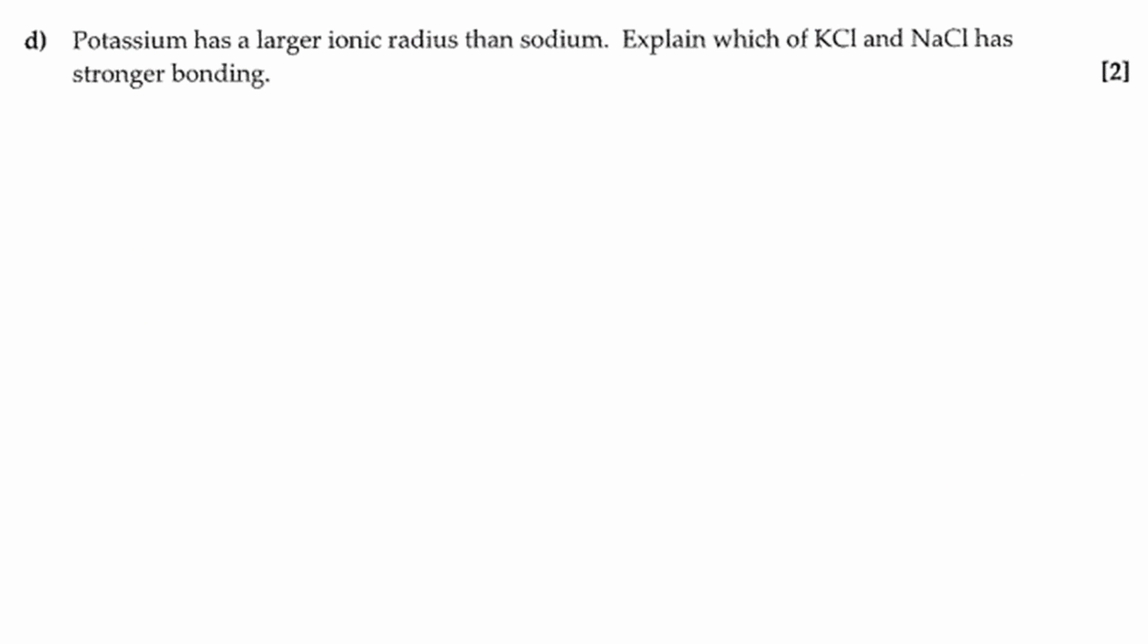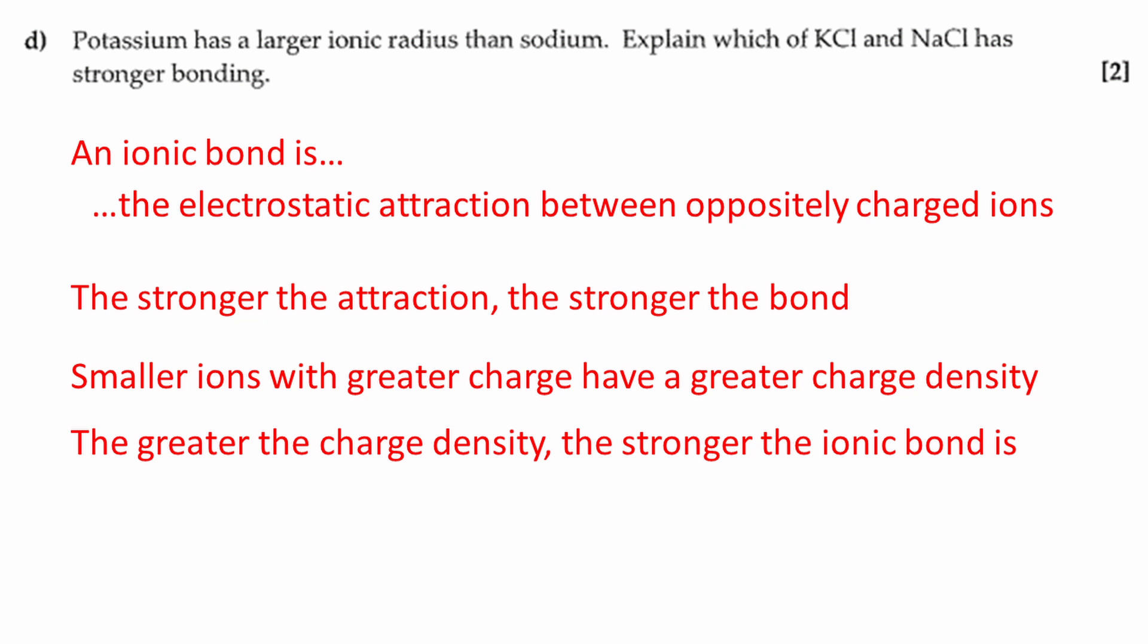Finally, we have to explain which of KCl or NaCl has stronger bonding. We are told that potassium has a larger ionic radius than sodium. Once again, an ionic bond is the electrostatic attraction between oppositely charged ions. The stronger the attraction, the stronger the bond.